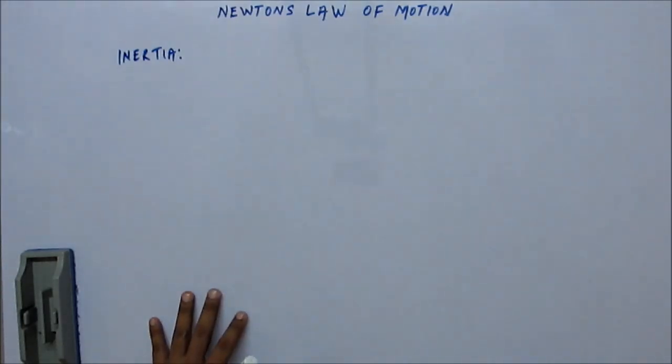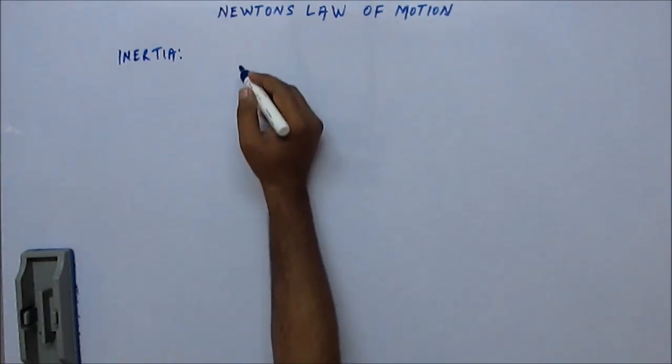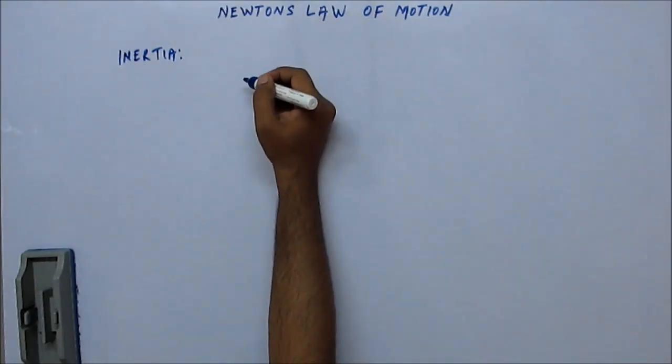Basically, inertia is the resistance to the change of its state. If it is at rest it will try and be at rest. If it is in motion it will try and be in motion. The definition of inertia was given by Newton himself in his book Principia Mathematica, in which he introduced Newton's first law of motion.